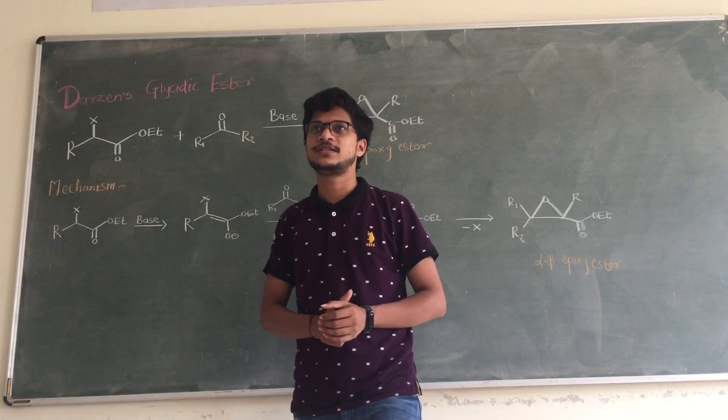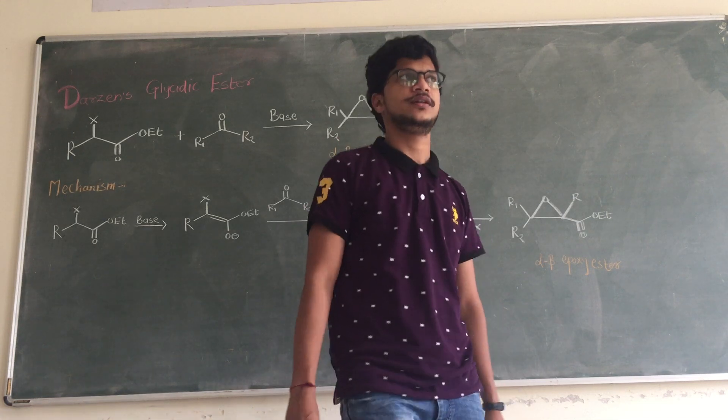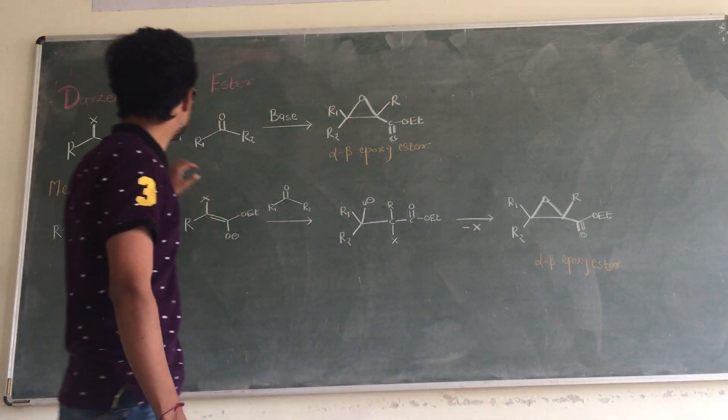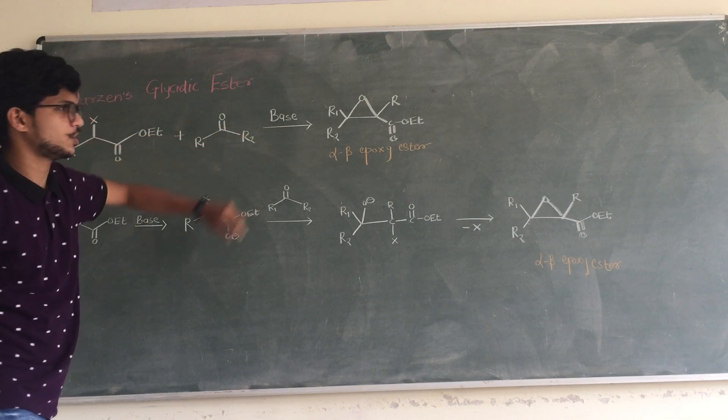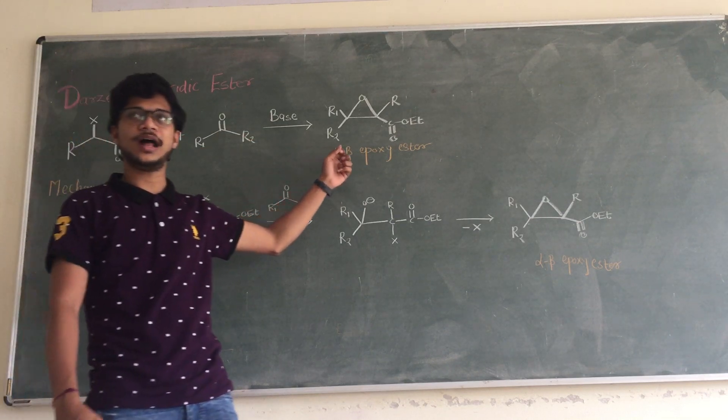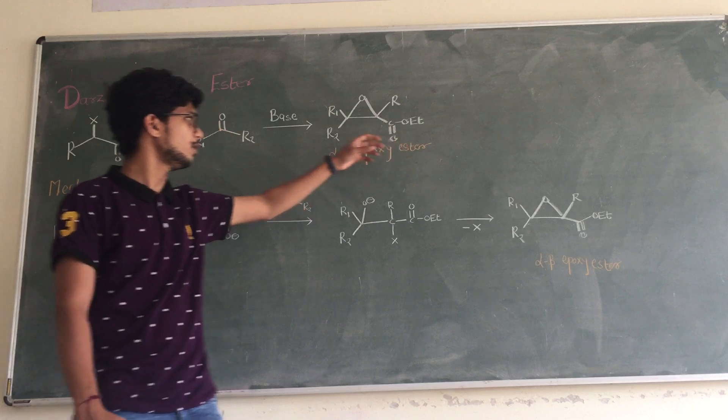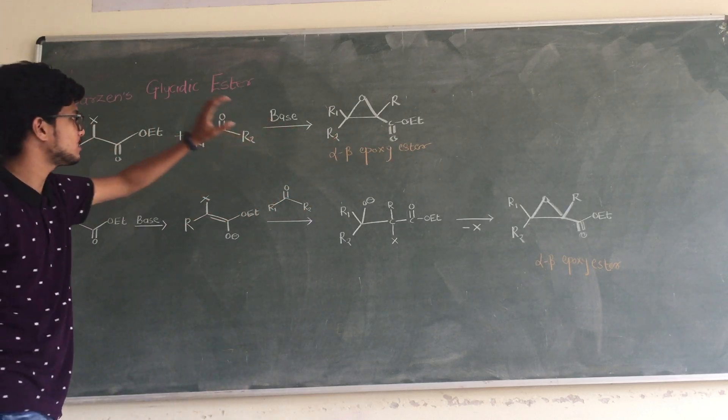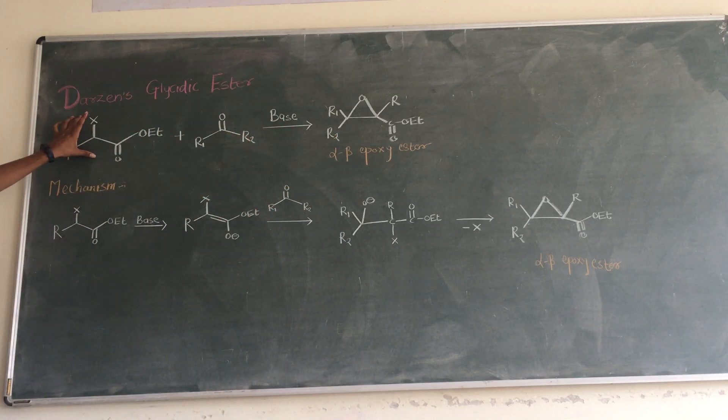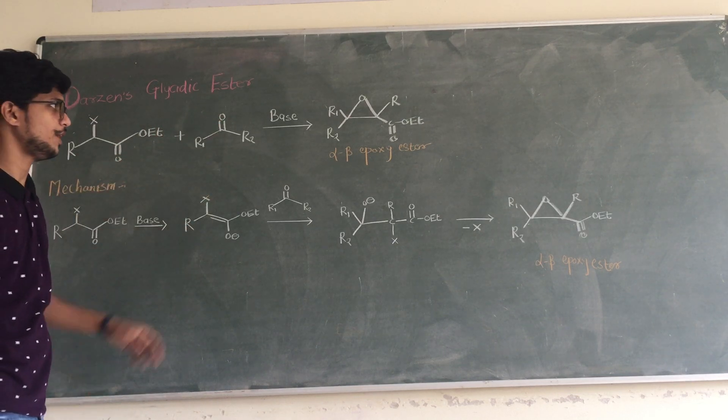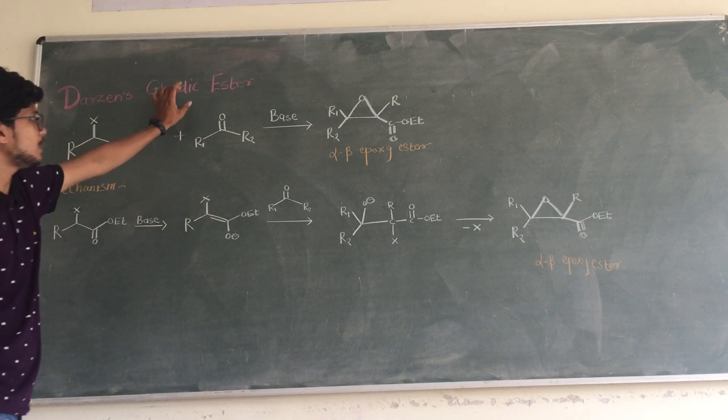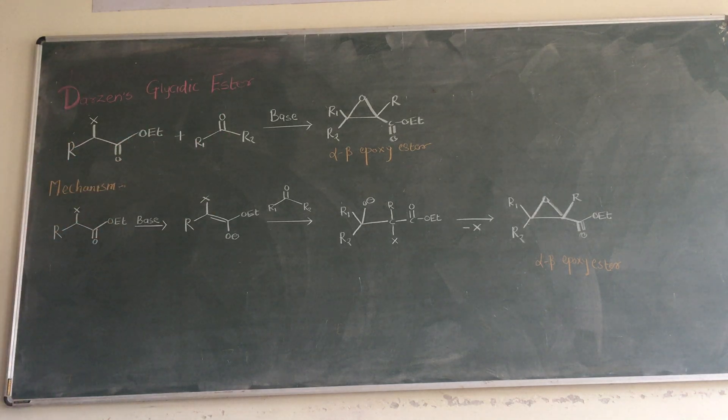In this video we have seen another type of name reaction, that is Darsan glycidic ester. In this reaction, the formation of alpha-beta epoxide ester from the base catalyzed condensation reaction of alpha-haloester and aldehyde or ketone is called the Darsan glycidic ester reaction. Now let's look at the mechanism.